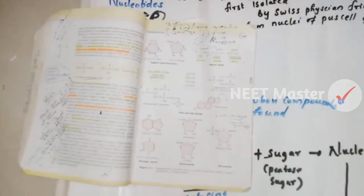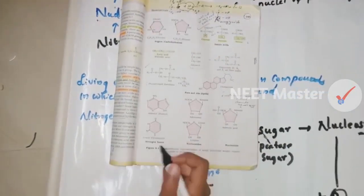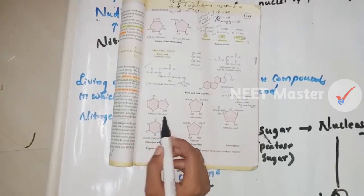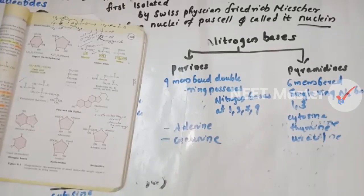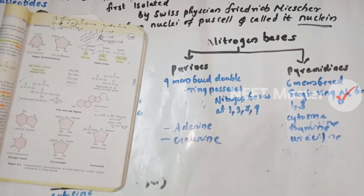Now we have a figure of purines and pyrimidines. Purines have a double ring structure and the nitrogen base positions are at N3, N7, and N9. Pyrimidines have a single ring structure and the nitrogen base is at the N3 position.